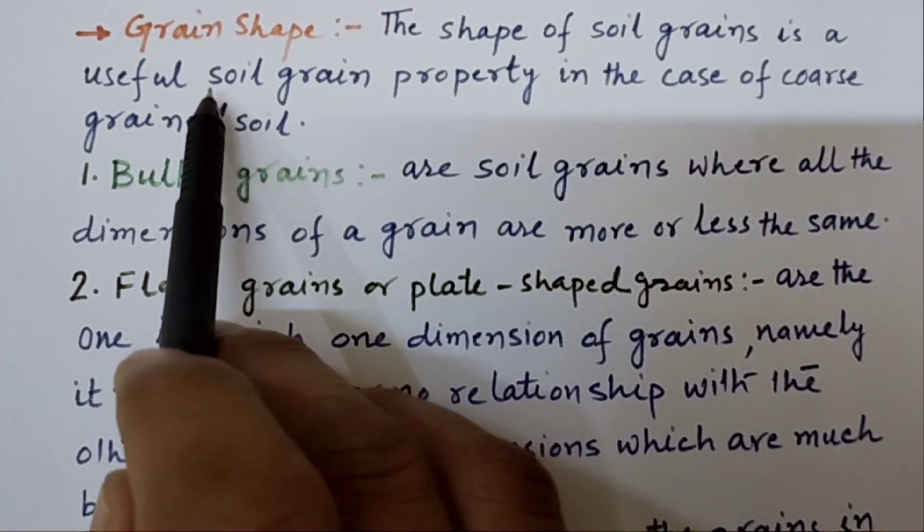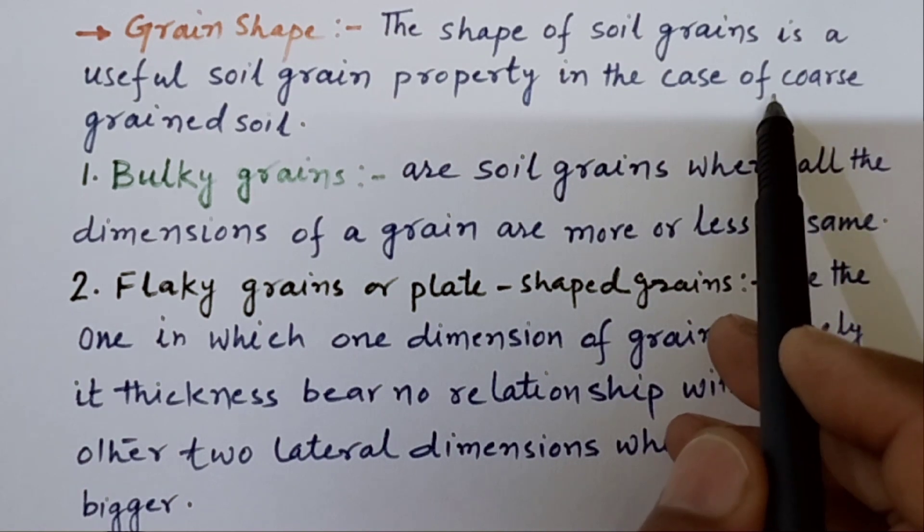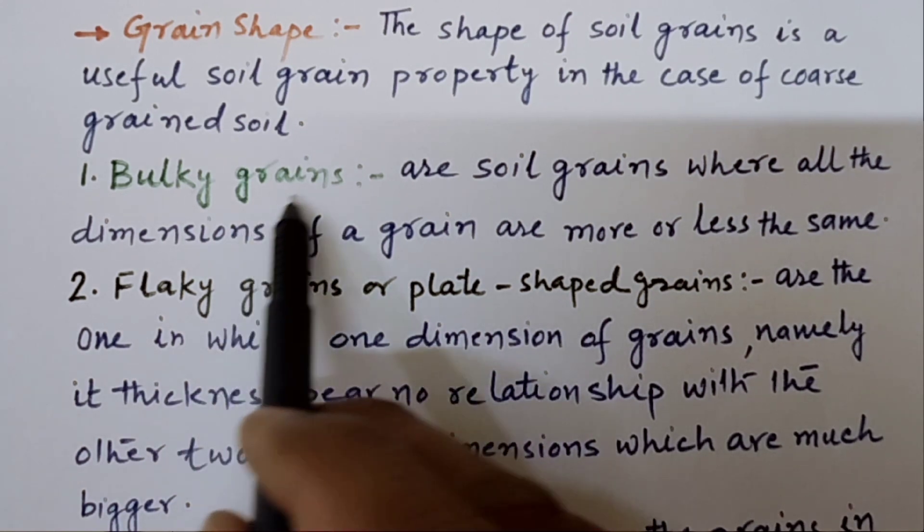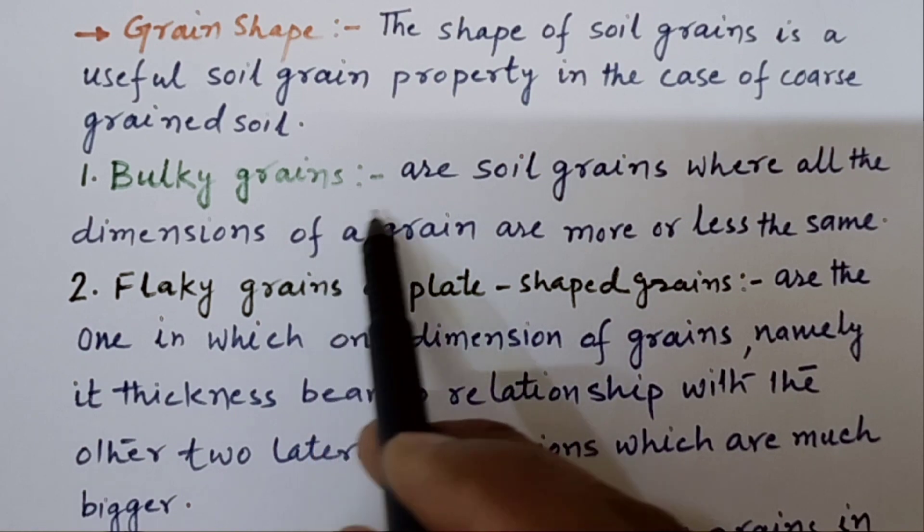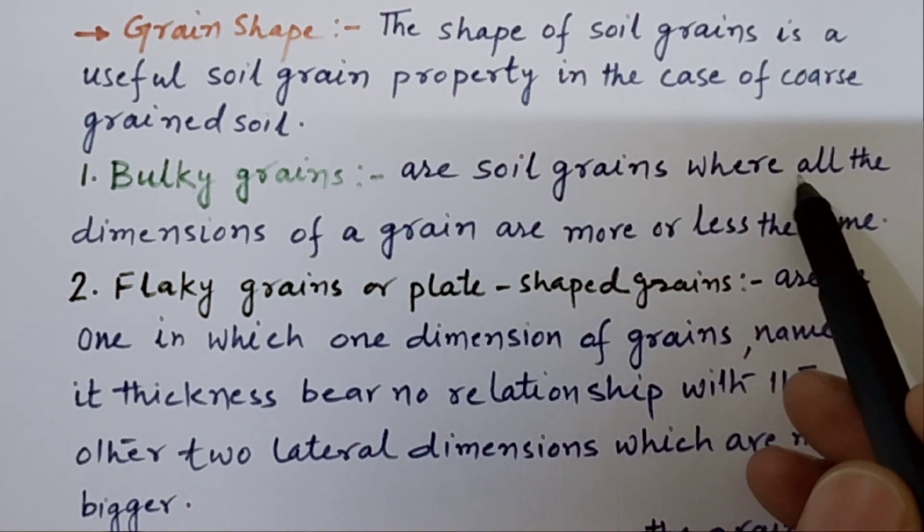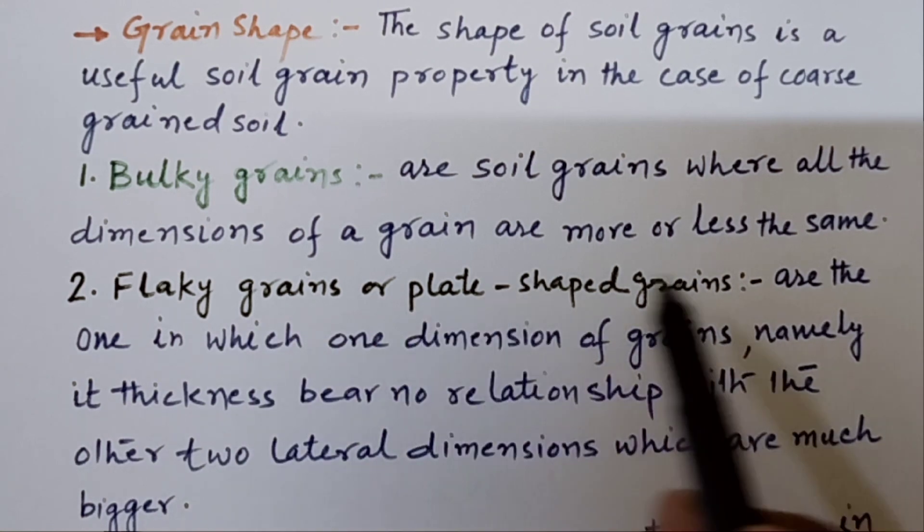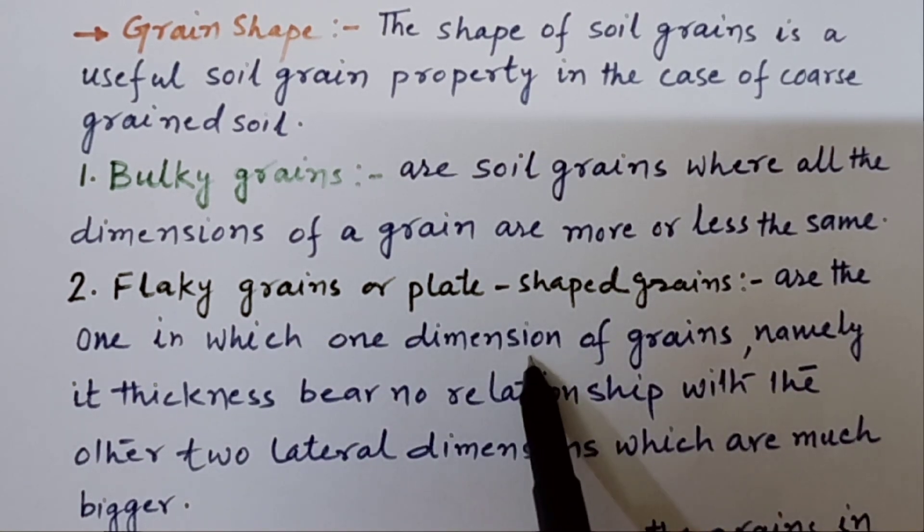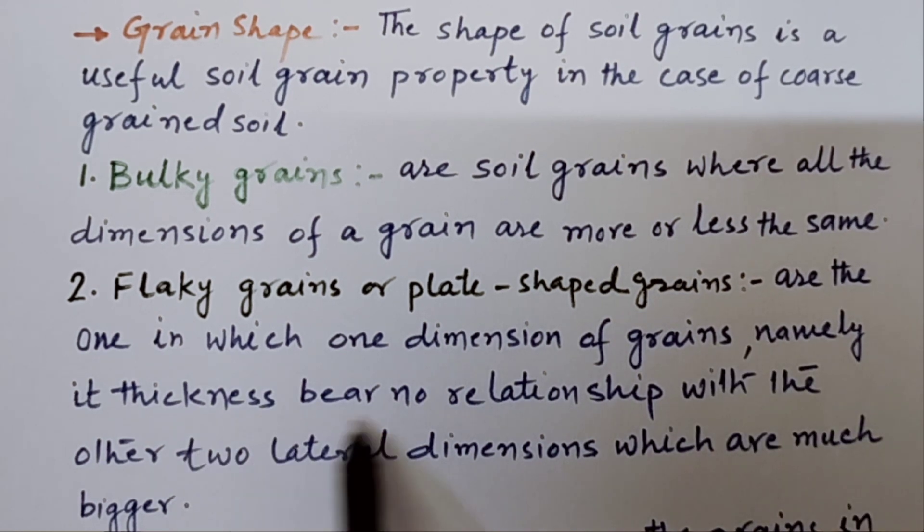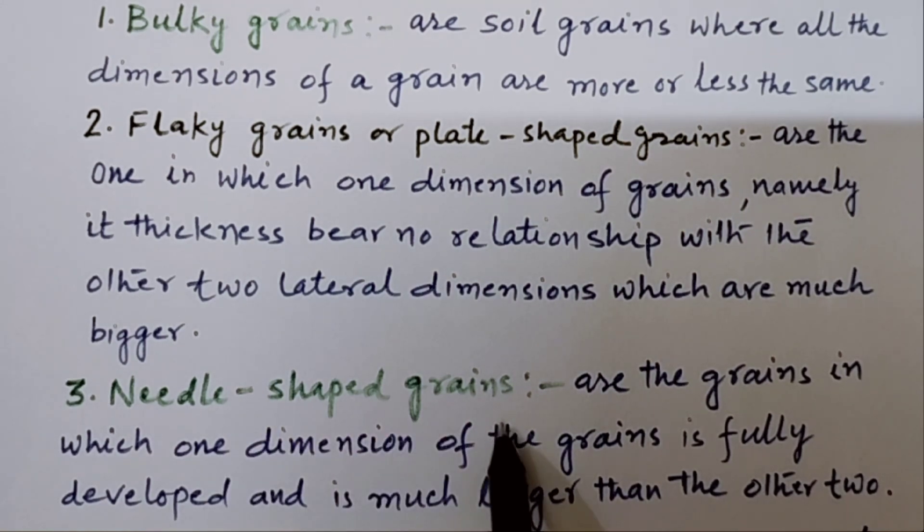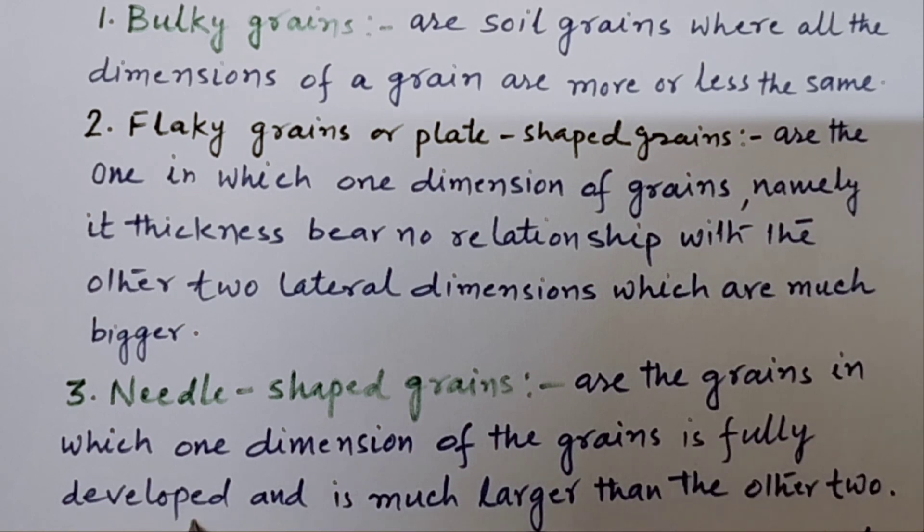The shape of soil grains is a useful soil grain property in the case of coarse grain soil. The shape may be bulky, flaky, or needle shape. Bulky shapes are soil grains where all dimensions of a grain are more or less the same. In case of flaky grain or plate shaped grain, one dimension of grain, namely its thickness, bear no relationship with the other two lateral dimensions which are much bigger. In case of needle shaped grains, one dimension of the grain is fully developed and is much larger than the other two.